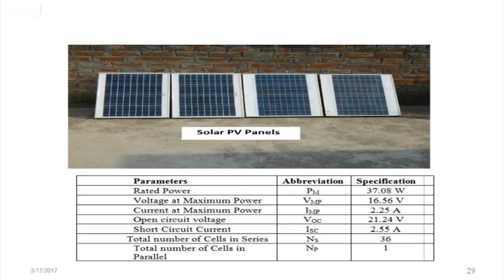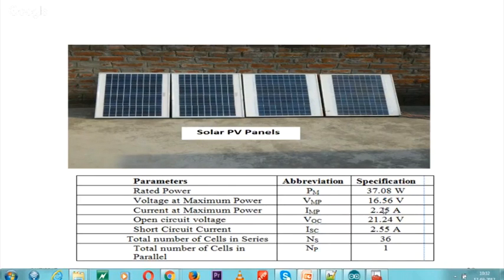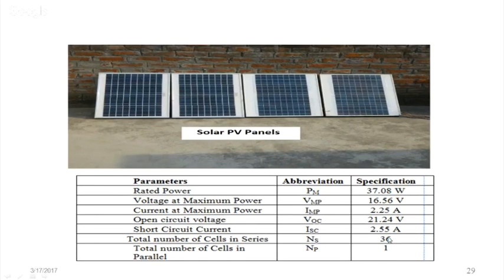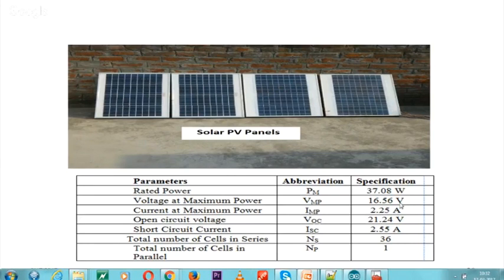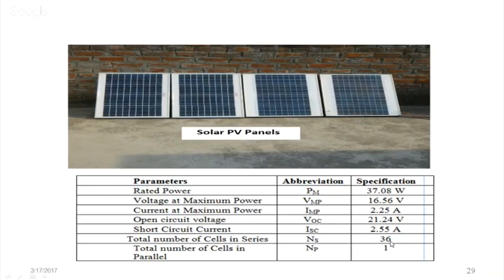The experimental setup uses four 36W solar panels. The Vikram panel datasheet specifies: maximum voltage 16V, current 2A, operating voltage 21V, short-circuit current 2.55A. These parameters — particularly Voc and Isc — are important for modeling. In the Simulink model, the number of parallel strings (Np) and series cells are set to match the real panel, giving Np=1 and 36 series cells.